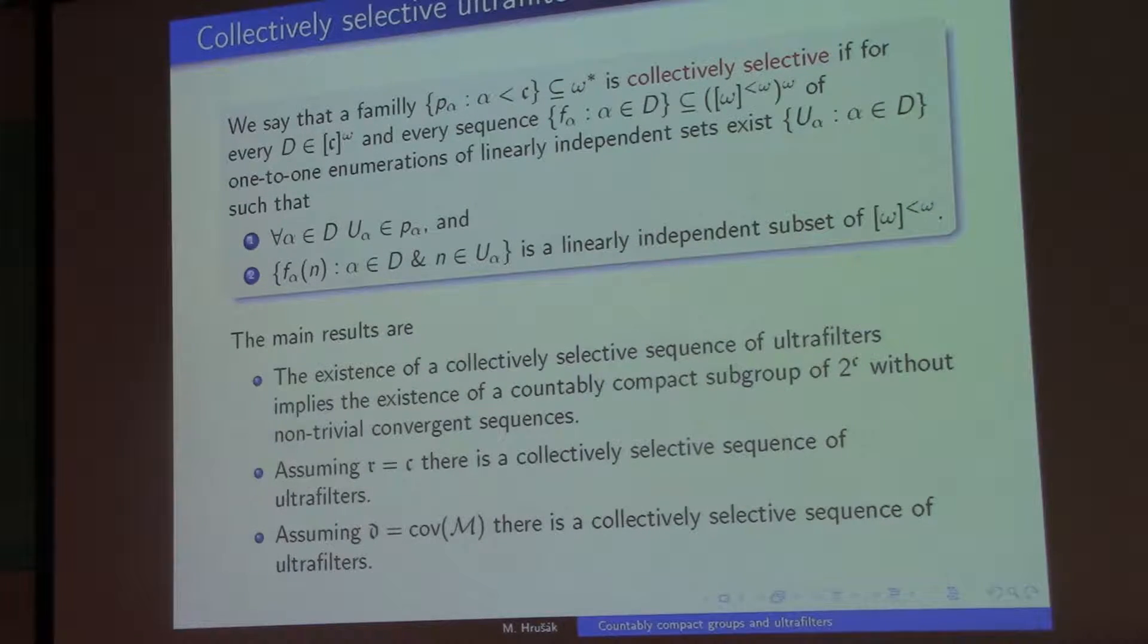then I can find elements of these ultrafilters such that if I union up all these images over these sequences, it is globally linearly independent. So all of it is a linearly independent subset of the group.